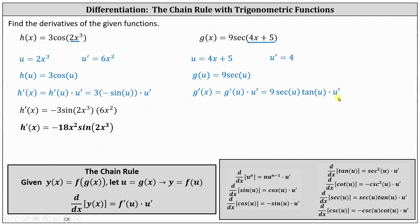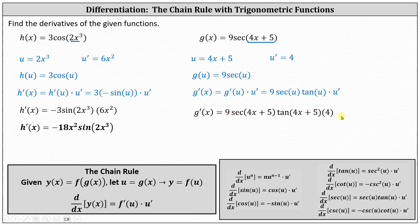Now we're done with the calculus. We found the derivative. We just need to write it back in terms of x. We replace u with 4x plus 5 and u prime with 4, which gives us g prime of x equals 9 times secant of the quantity 4x plus 5 times tangent of the quantity 4x plus 5 times 4. Multiplying 9 and 4, the final derivative is g prime of x equals 36 secant of the quantity 4x plus 5 times tangent of the quantity 4x plus 5.